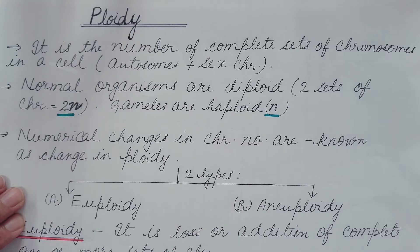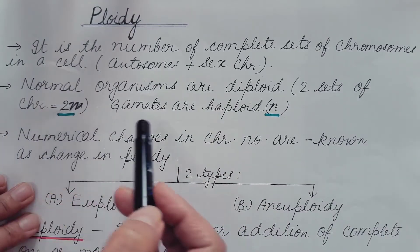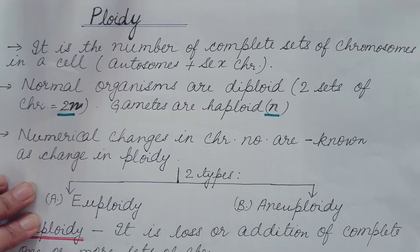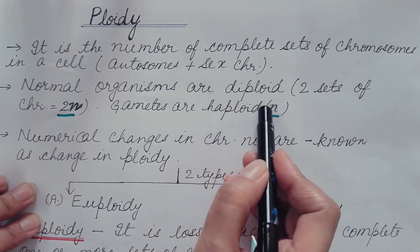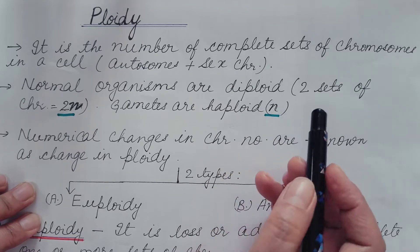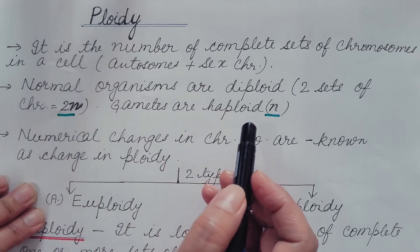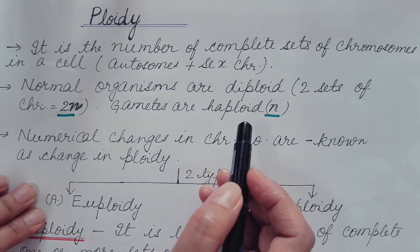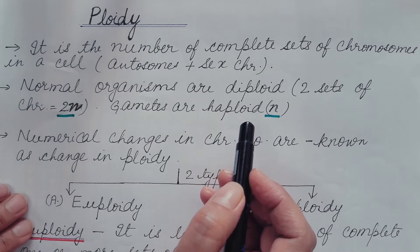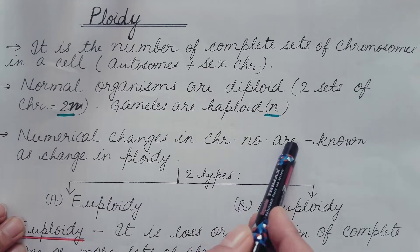are diploid, consisting of two sets of chromosomes represented as 2n. During sexual reproduction, these organisms produce gametes that are haploid, having only one set of chromosomes represented as n. The diploid number is retained by the fusion of both male and female gametes, producing a diploid zygote which leads to the development of diploid progeny or offspring.